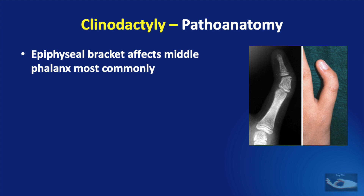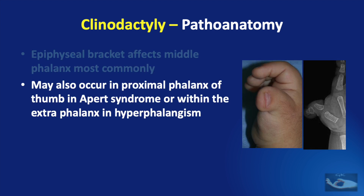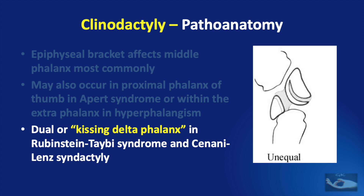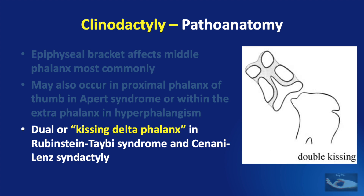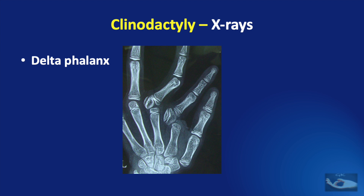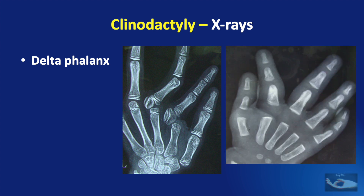When the bracket is incomplete, some longitudinal growth occurs and the phalanx is trapezoidal. The epiphysial bracket commonly affects the middle phalanx but can also occur in the proximal phalanx of the thumb in Apert syndrome, or within the extra phalanx in hyperphalangism or triphalangeal thumb. It can also occur as a dual or kissing delta phalanx in Rubinstein-Taybi syndrome and Sunamiti-Lenz syndactyly. The kissing delta phalanx refers to two delta phalanges in place of a single normal phalanx — they may be unequal, incomplete, or double. This picture shows the delta phalanx involving the thumb in Rubinstein-Taybi syndrome, with characteristic x-ray appearances where the physis have and have not yet fused.